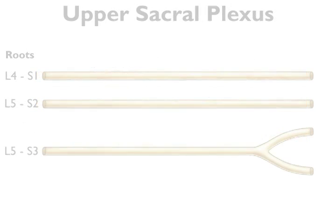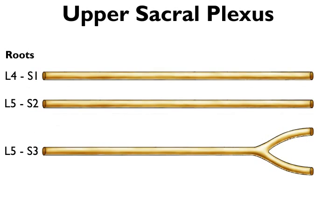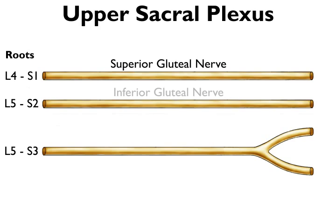The upper sacral plexus is formed from the roots at spinal levels L4, L5, S1, S2, and S3. The three nerves of the upper sacral plexus are the superior gluteal nerve, the inferior gluteal nerve, and the sciatic nerve.